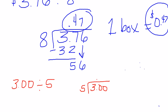Five will not go into three. So five will go into 30 six times. Six times five is 30. We subtract and get zero. Bring down our last zero. Five will go into zero, zero times. We are finished. So one box would be 60 cents.